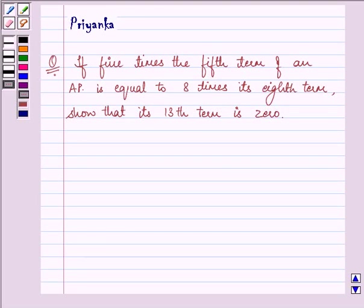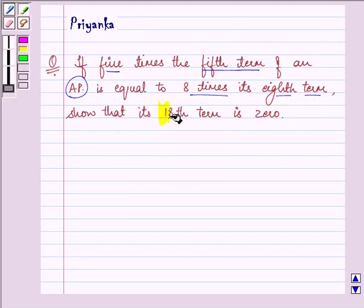Hello friends, how are you all doing today? The question says, if 5 times the 5th term of an AP is equal to 8 times its 8th term, show that its 13th term is 0.